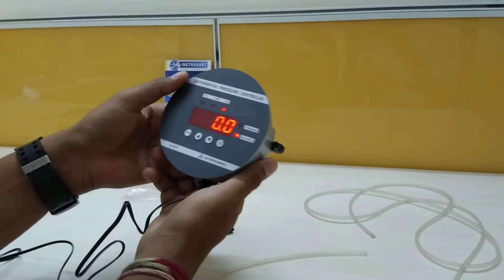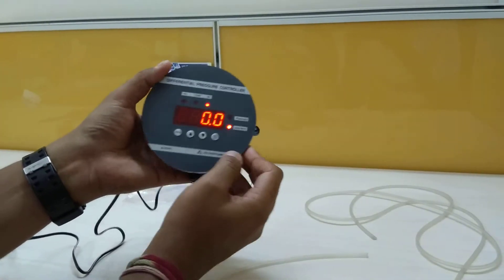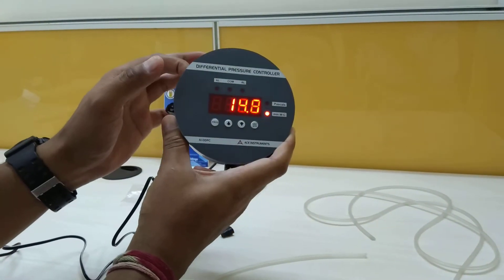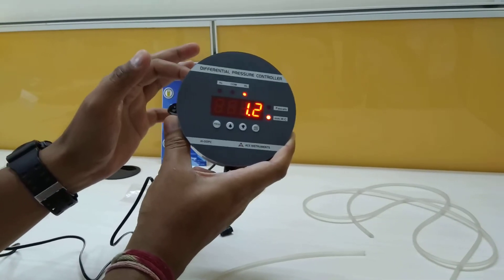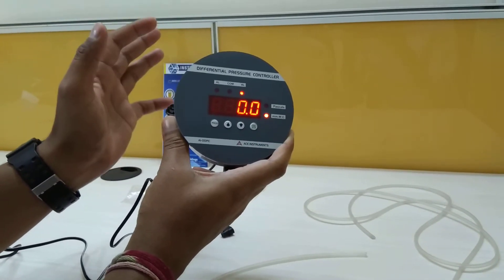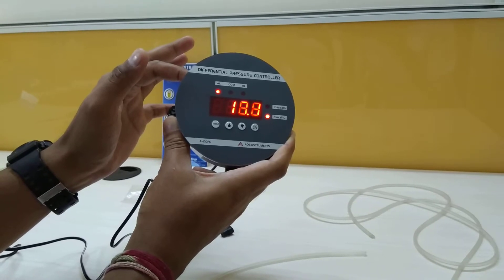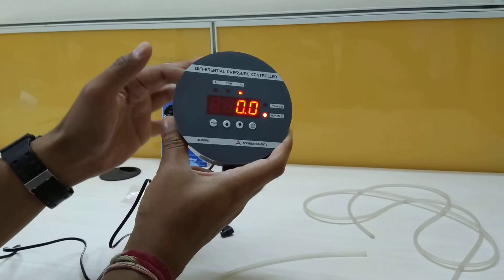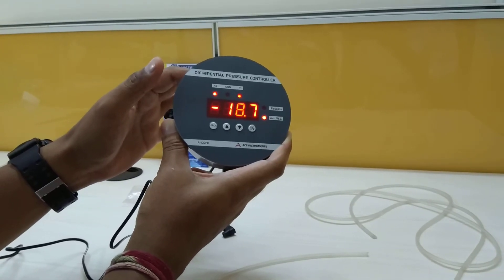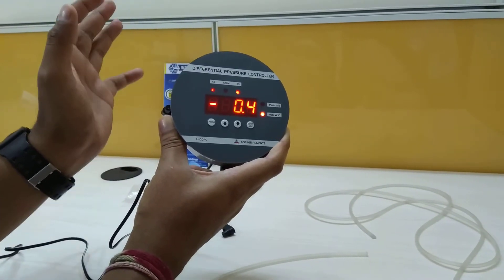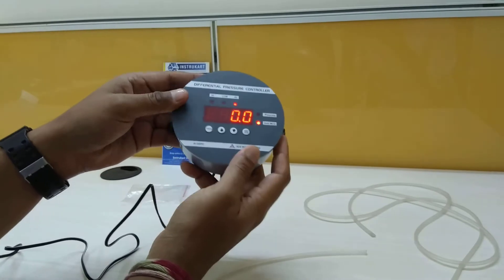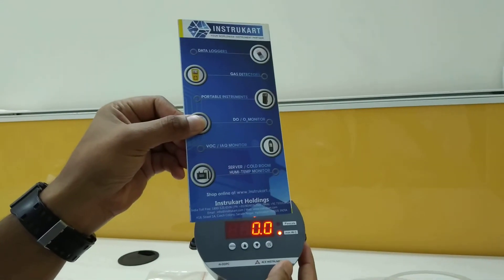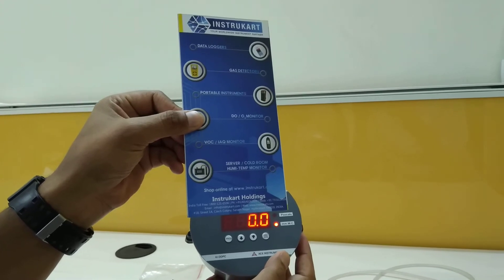All other features are similar to the digital pressure gauge. You can see the alarm triggering at a setpoint and the relay getting activated. For more information, visit www.instrucard.com.